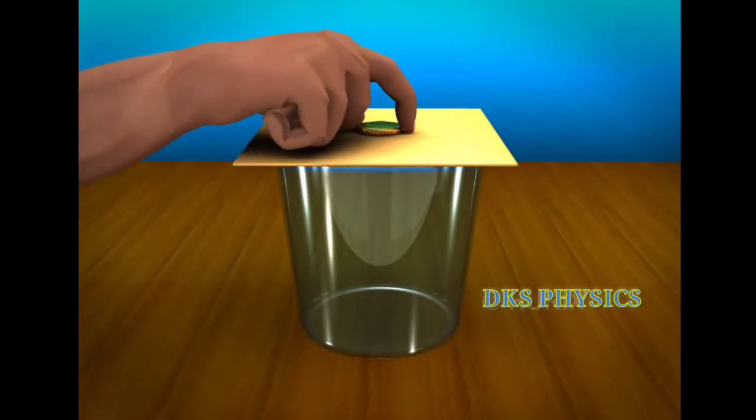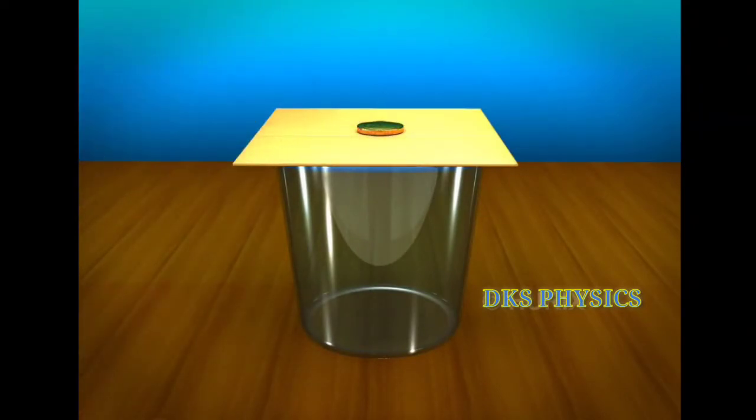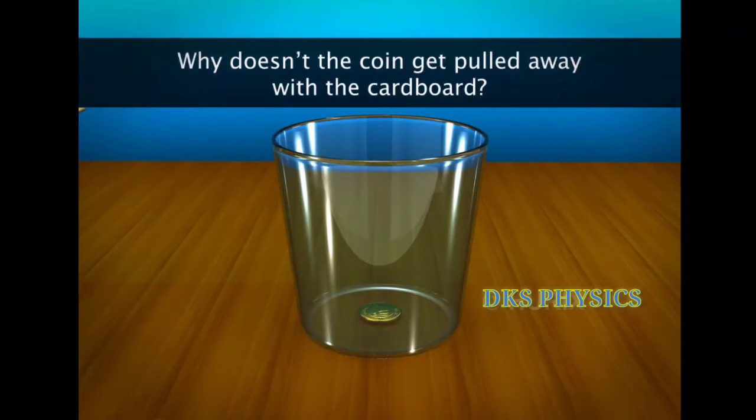Here is another activity for you to observe. If you pull out the cardboard with a jack, the coin will drop into the tumbler. Why doesn't the coin get pulled away with the cardboard?